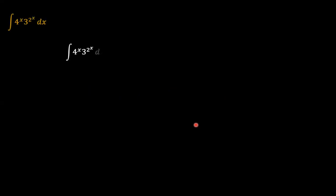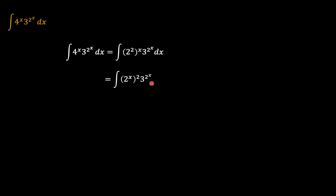So, 4 to the power x times 3 to the power 2 to the power x can also be expressed using 2 to the power 2 — that is, 4 to the power x can be expressed as 2 to the power 2x. We can then rearrange the powers, bringing x into the bracket and 2 outside.